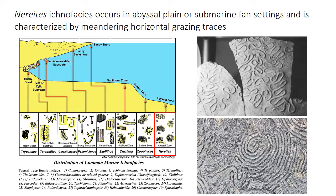The final soft-substrate marine ichnofacies covered here is the Nereites ichnofacies, typically found on the abyssal plain or on submarine fans with intermittent turbidity current events. This ichnofacies is characterized by highly organized and often elegantly patterned horizontal grazing traces — spiral patterns, tightly meandering bands, and other extremely structured and organized patterns.